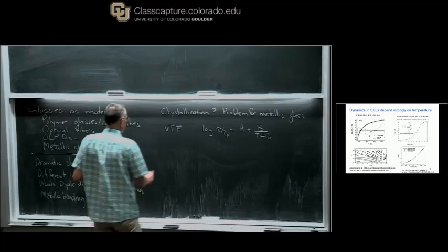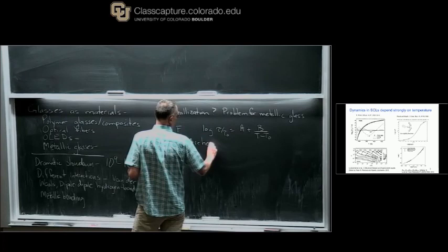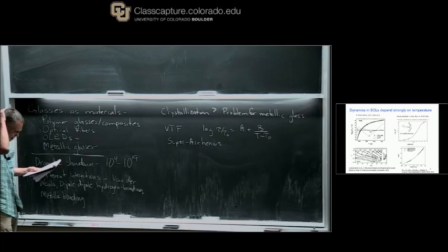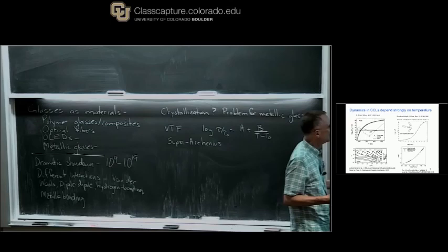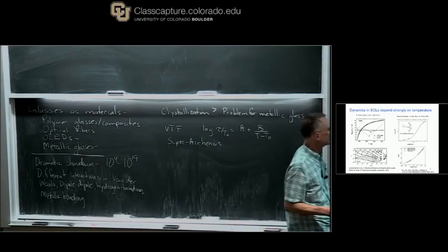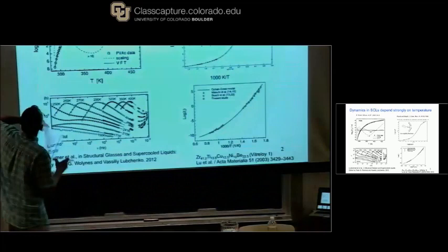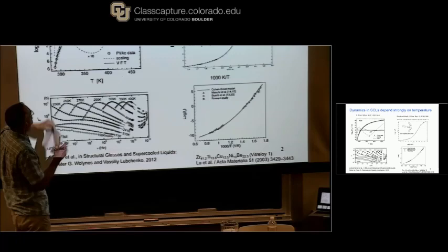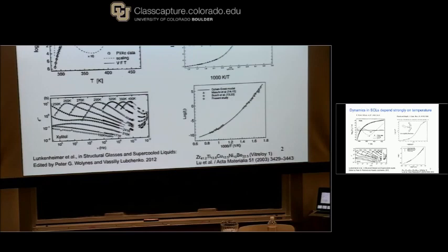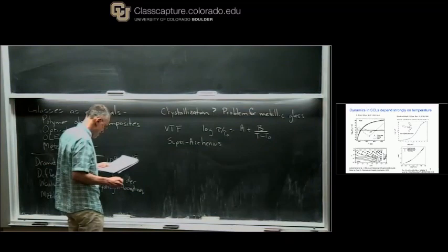All of these do show a super-Arrhenius temperature dependence. And another thought: if I had a standard simulation — not one of Ludovic's super simulations — and I could only simulate to 10^-6 or 10^-5 seconds, would I be able to make any reasonable prediction about what was going to happen below that? I would say the answer would be no. So there's a challenge for simulations.